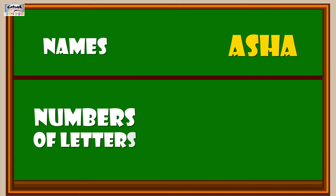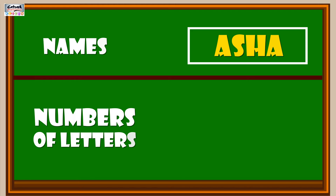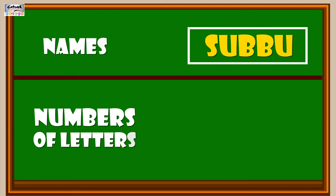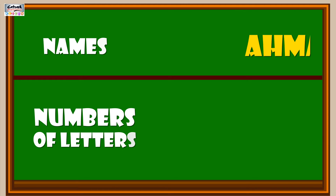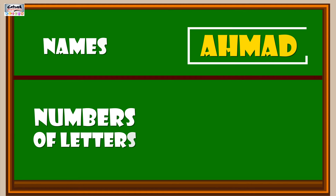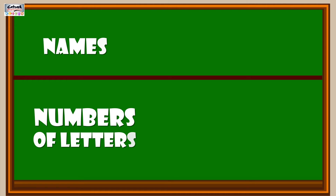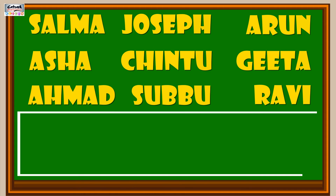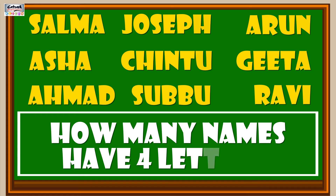Aasha has 4 letters. Subu has 5 letters. Ahmed has 5 letters. Ravie has 5 letters. How many names have 4 letters?